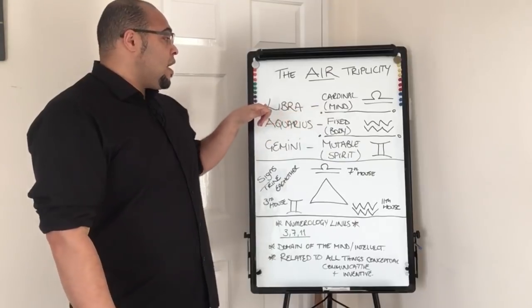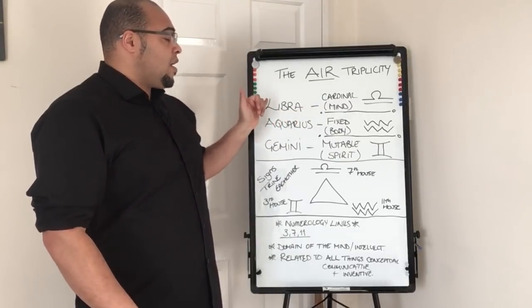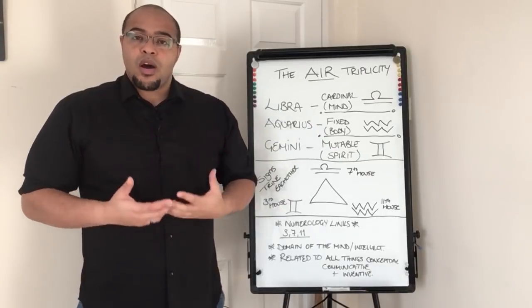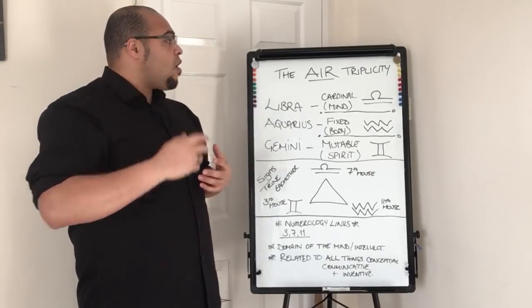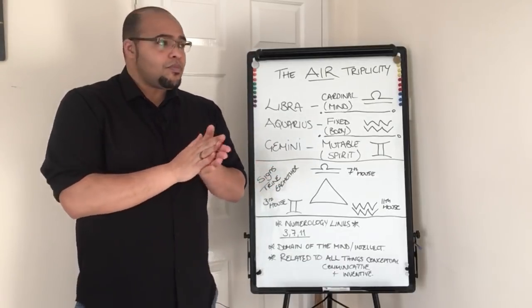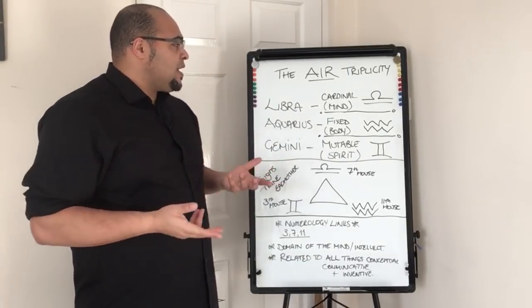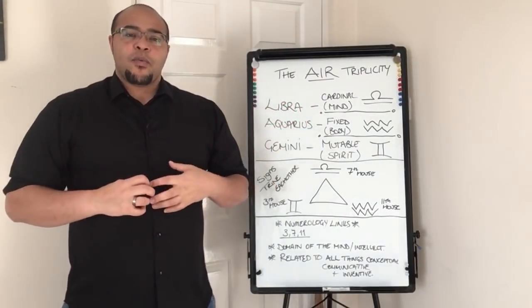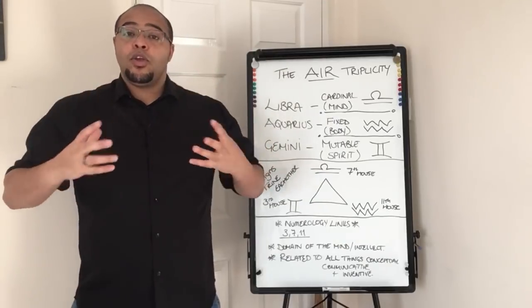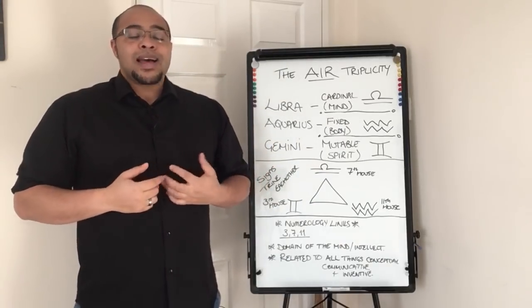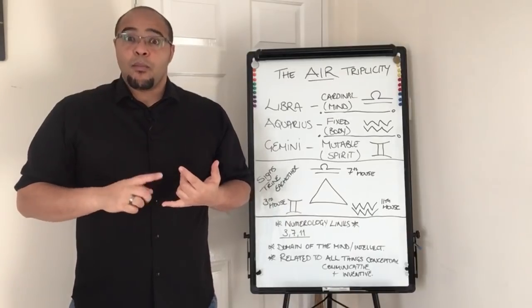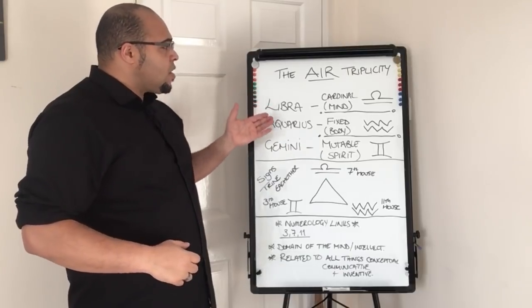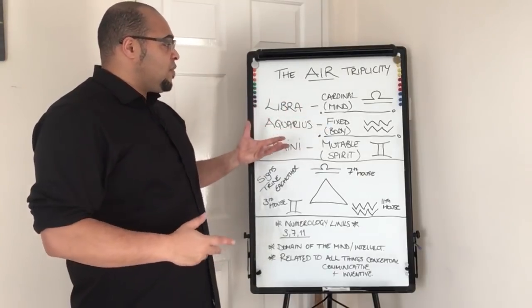You will have the cardinal signs—the cardinal air sign is Libra. A cardinal sign is something that would start a season. So, Libra is the start of autumn, and it takes us all the way through into winter. With the cardinal signs, the feeling that I get is the cardinal signs represent the mind in the human framework.